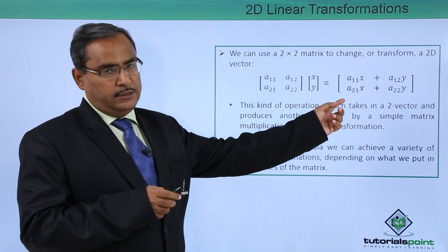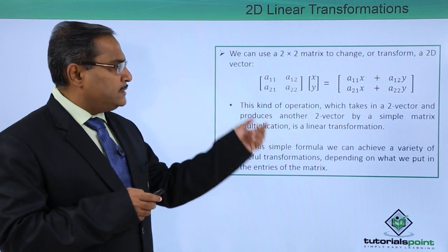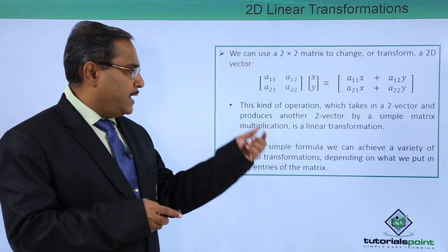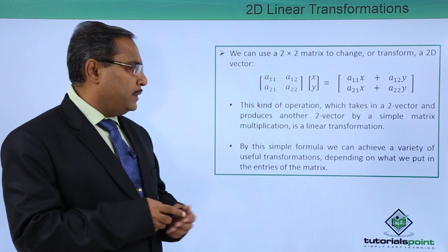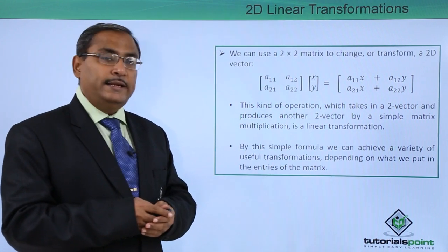we get a 2 by 1 matrix as output. This kind of operation takes in a 2-vector and produces another 2-vector by simple matrix multiplication, and this is known as linear transformation.